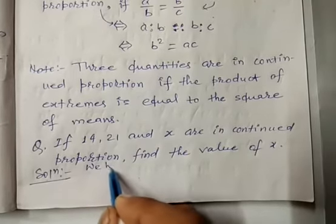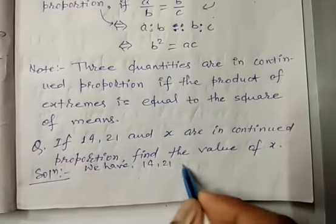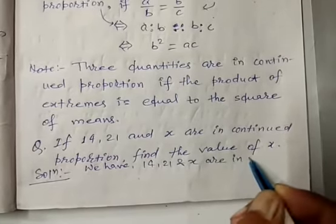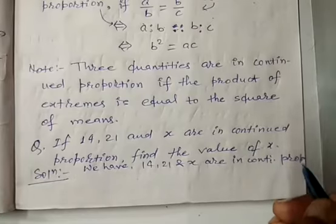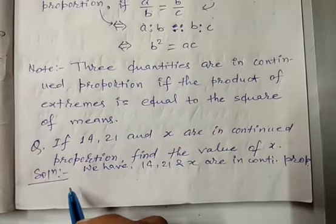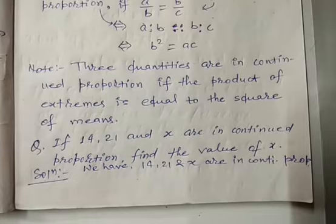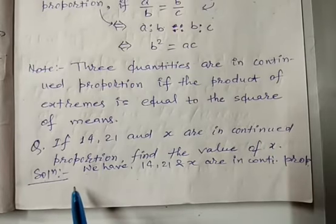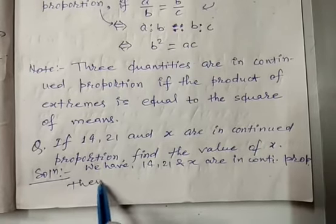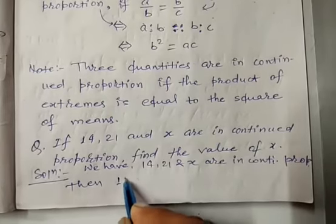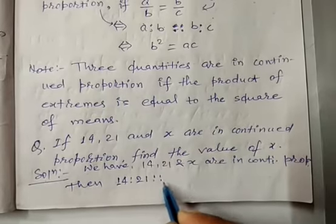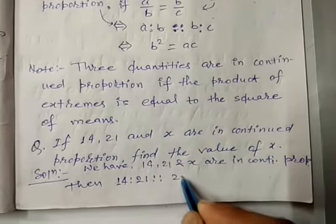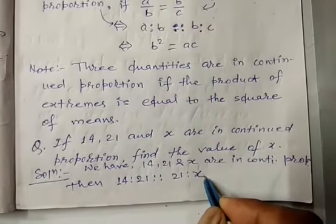Solution: We have 14, 21, and x in continued proportion. Then, ratio of 1st and 2nd is proportional to or equal to ratio of 2nd and 3rd. That is, 14:21 = 21:x.